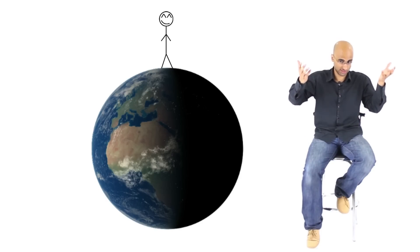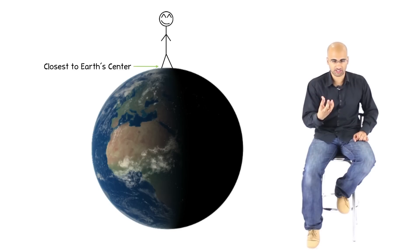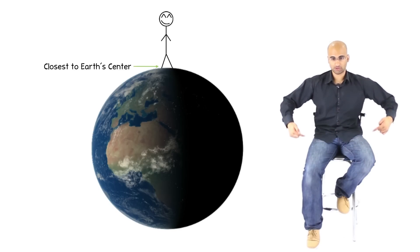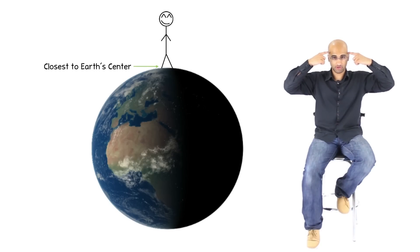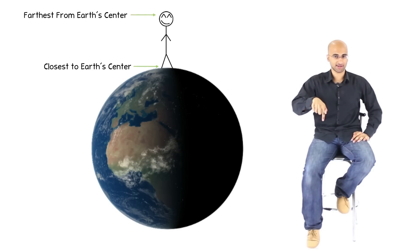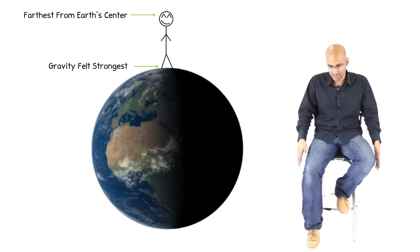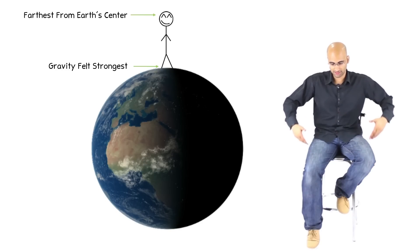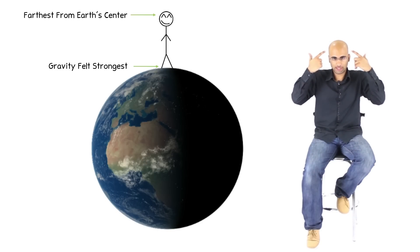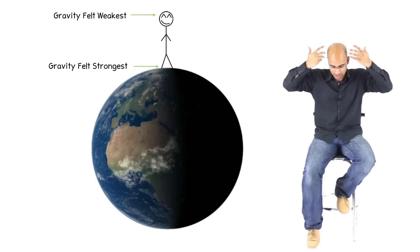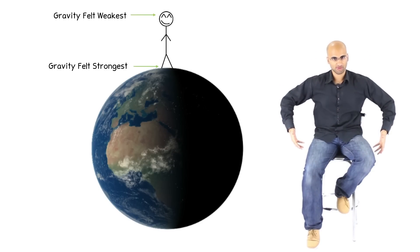This actually creates something that is very interesting. If you were to stand on Earth's surface, your feet will be the closest thing to Earth's center. Anything else after your feet will become farther and farther away from Earth's center until you end up with your head, which is the farthest body part from the center of the Earth. This means that your feet will experience more gravity than other body parts in your body. And your head will experience the least amount of gravity relative to the rest of your body.